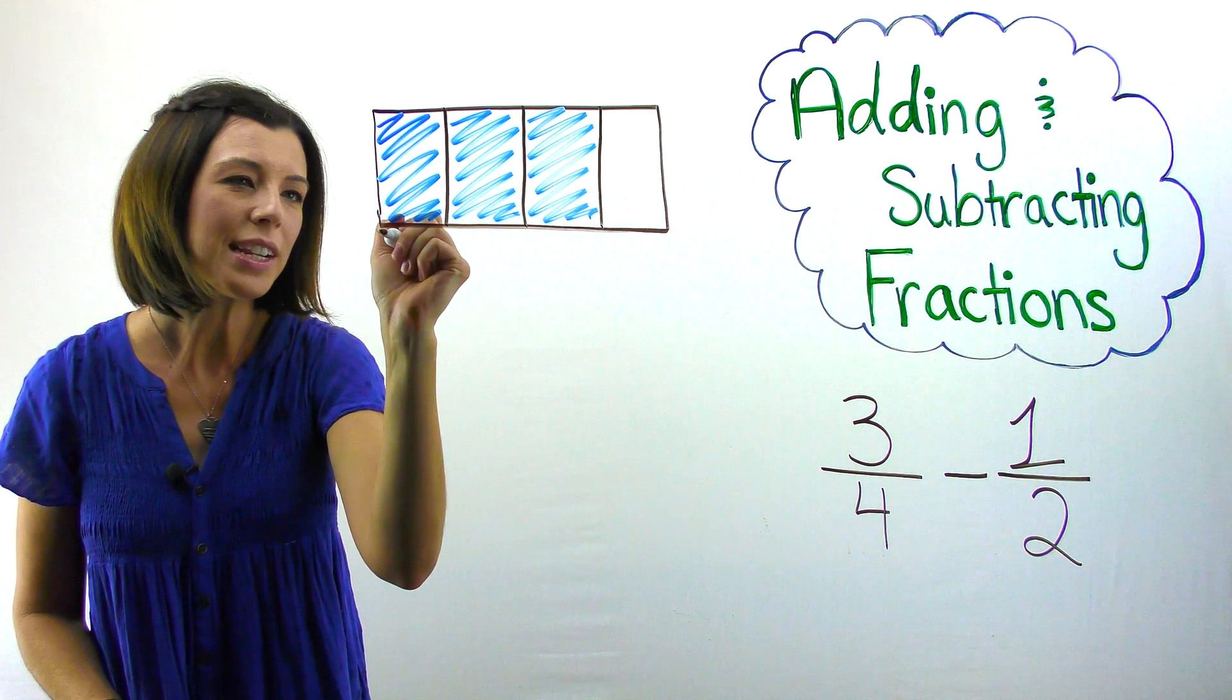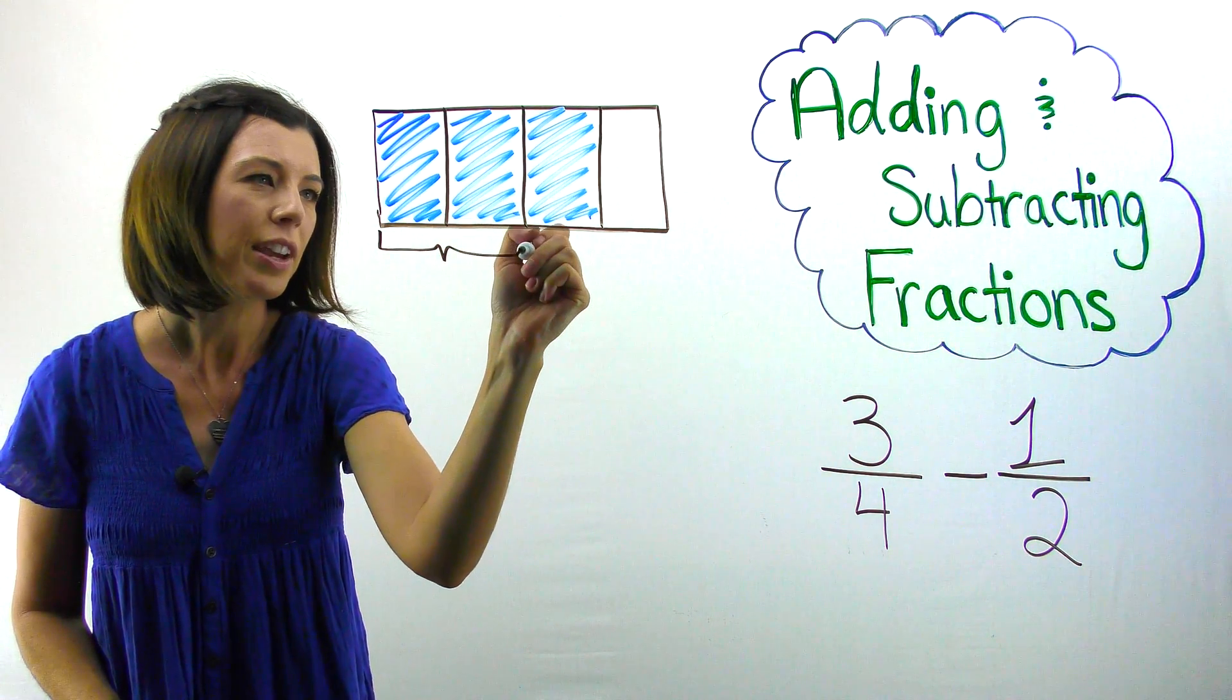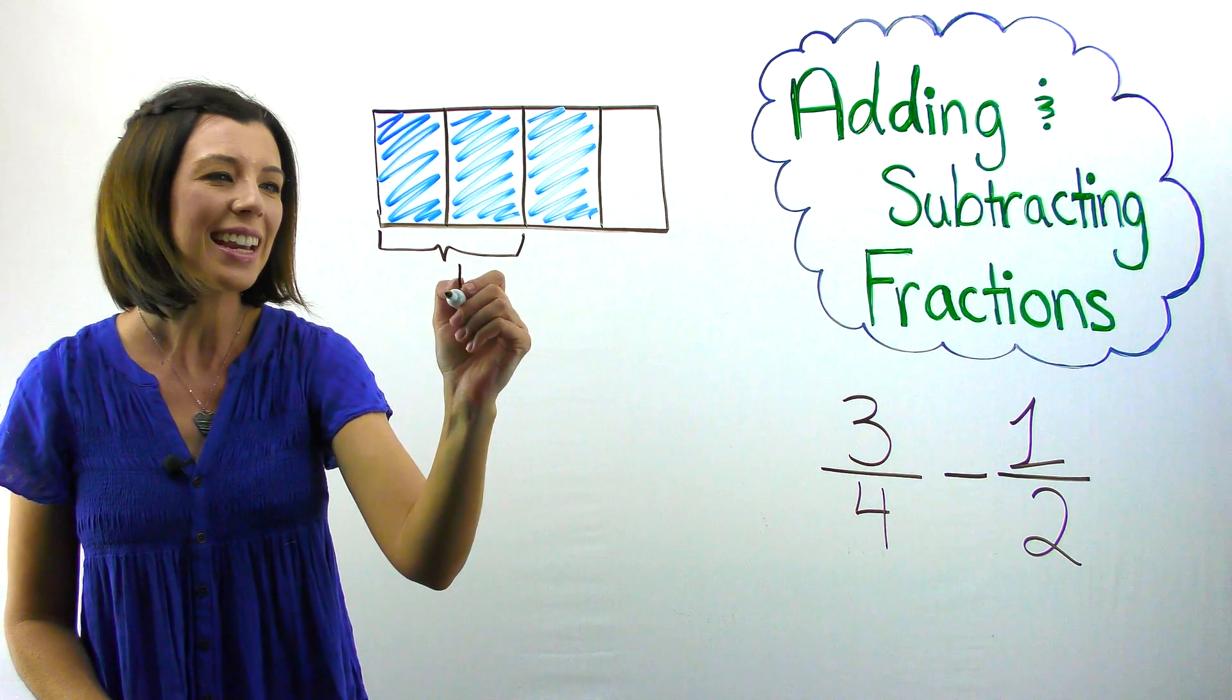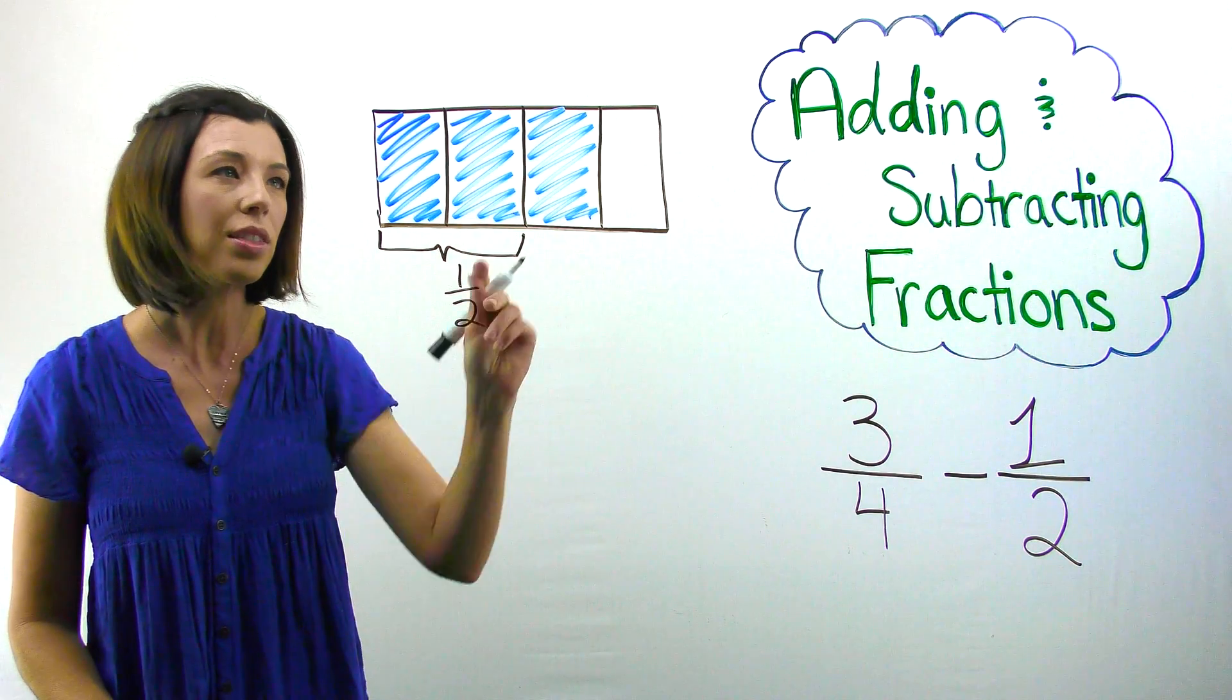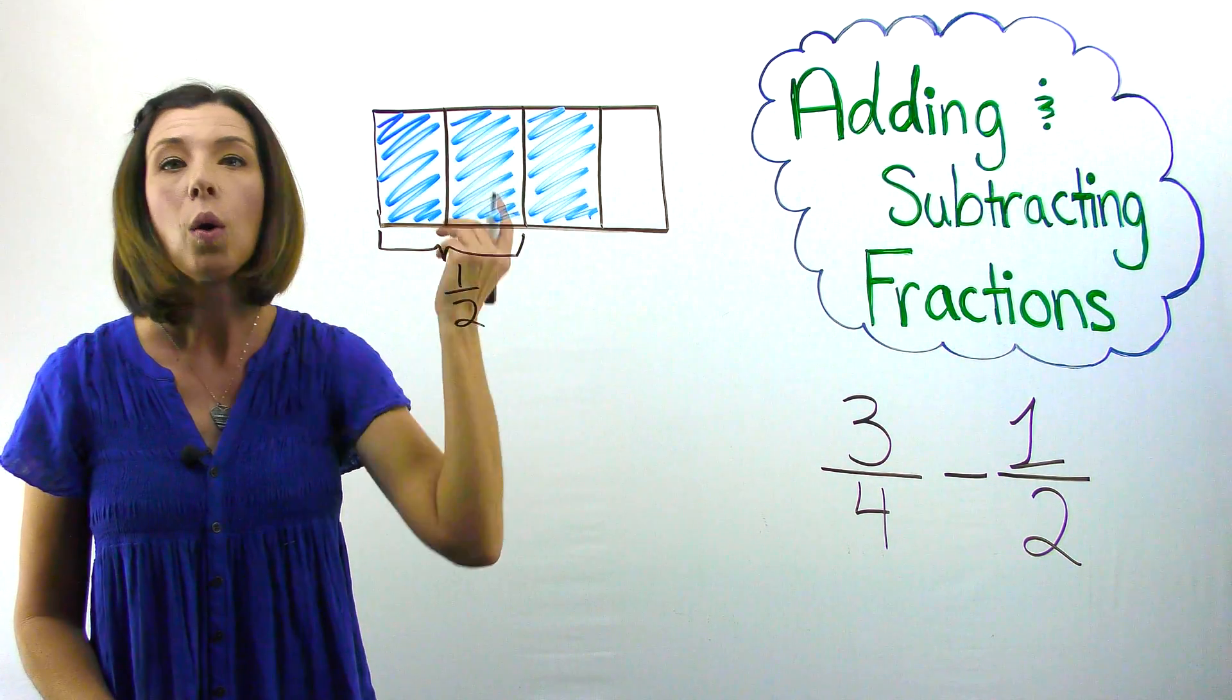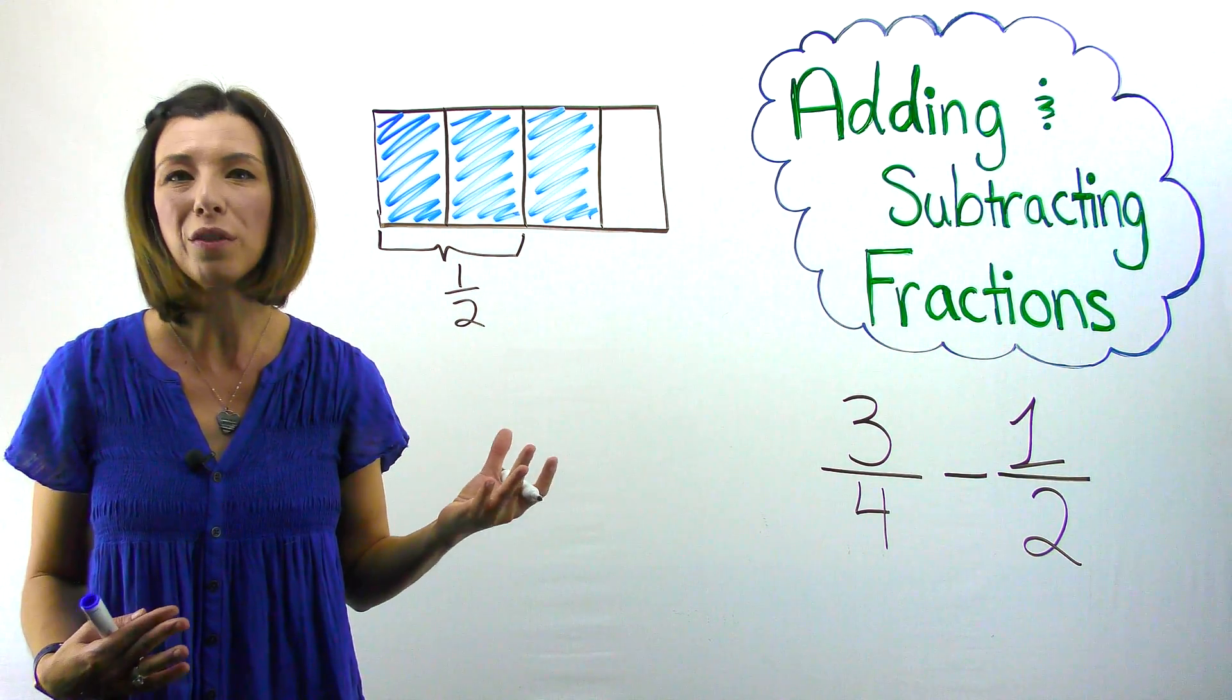Well, if I'm just taking away one-half, that means that I need to take that away. I'm subtracting that, which is going to leave me with this piece right here. What is that piece? It's one-fourth.